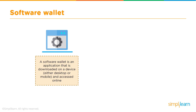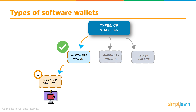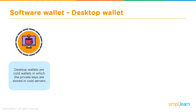A software wallet is an application downloaded on a device — either a desktop, a mobile, or it could be a web-based wallet accessible online. Popular examples are Jaxx, Bread Wallet, and Copay. Software wallets can be categorized into desktop wallets, online or web wallets, and mobile wallets. Desktop wallets are like cold wallets where private keys are stored on your desktop — you can unplug from the internet, do offline transactions, and come back online.